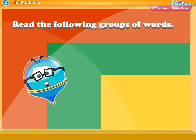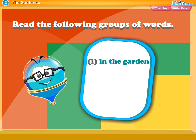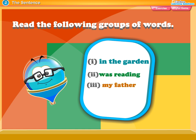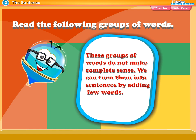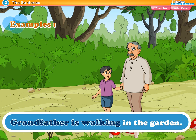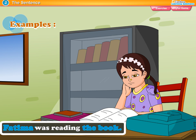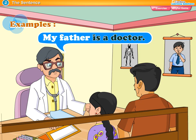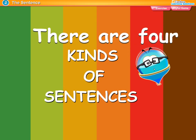Read the following groups of words: one — 'in the garden,' two — 'was reading,' three — 'my father.' These groups of words do not make complete sense. We can turn them into sentences by adding a few words. Examples: one — 'Grandfather is walking in the garden.' Two — 'Fatima was reading the book.' Three — 'My father is a doctor.'